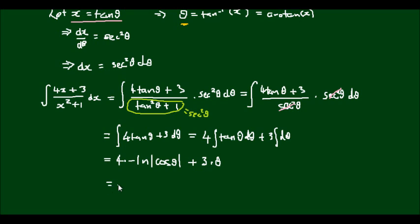So I'm going to rewrite that as negative 4 ln of cos theta plus 3 times the arc tan of x. Now for cos theta, to get that back into x is a little bit more tricky.